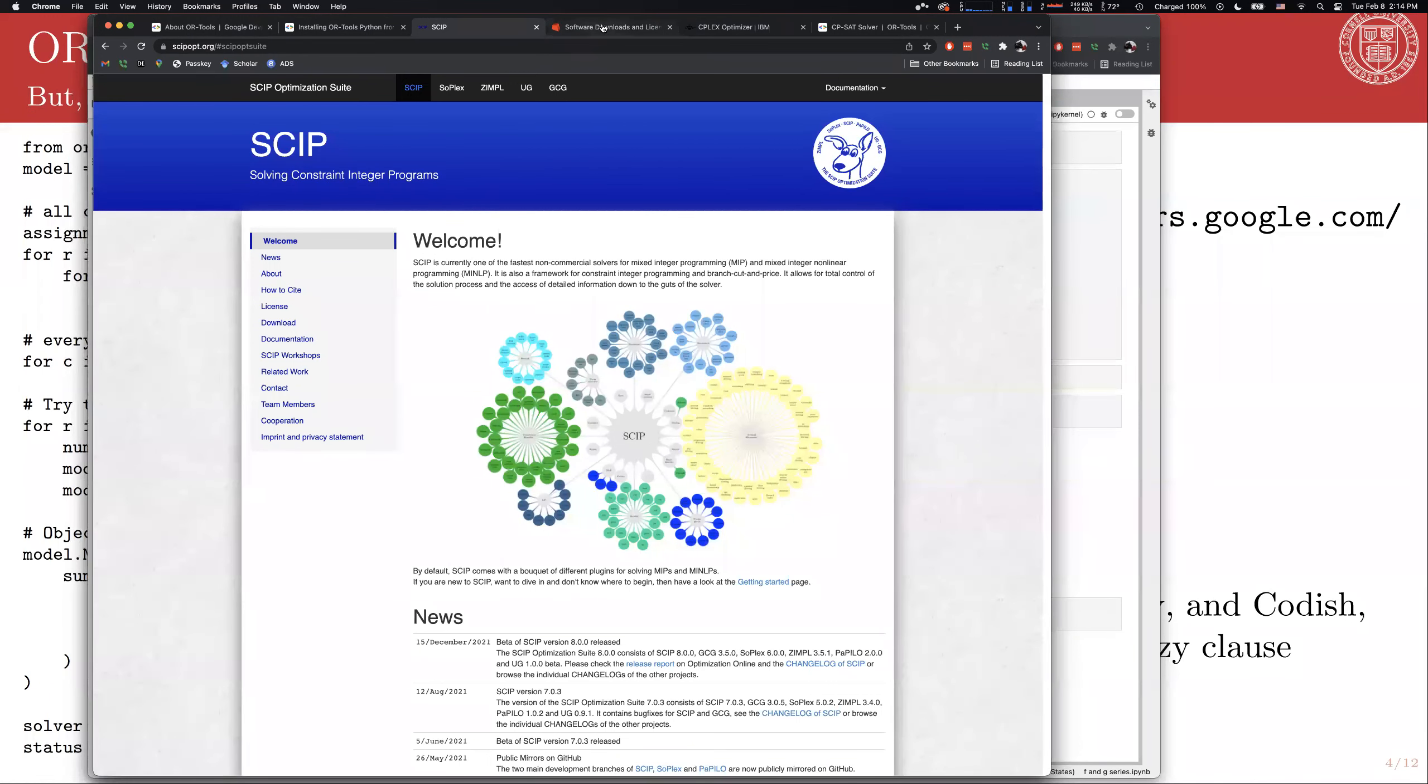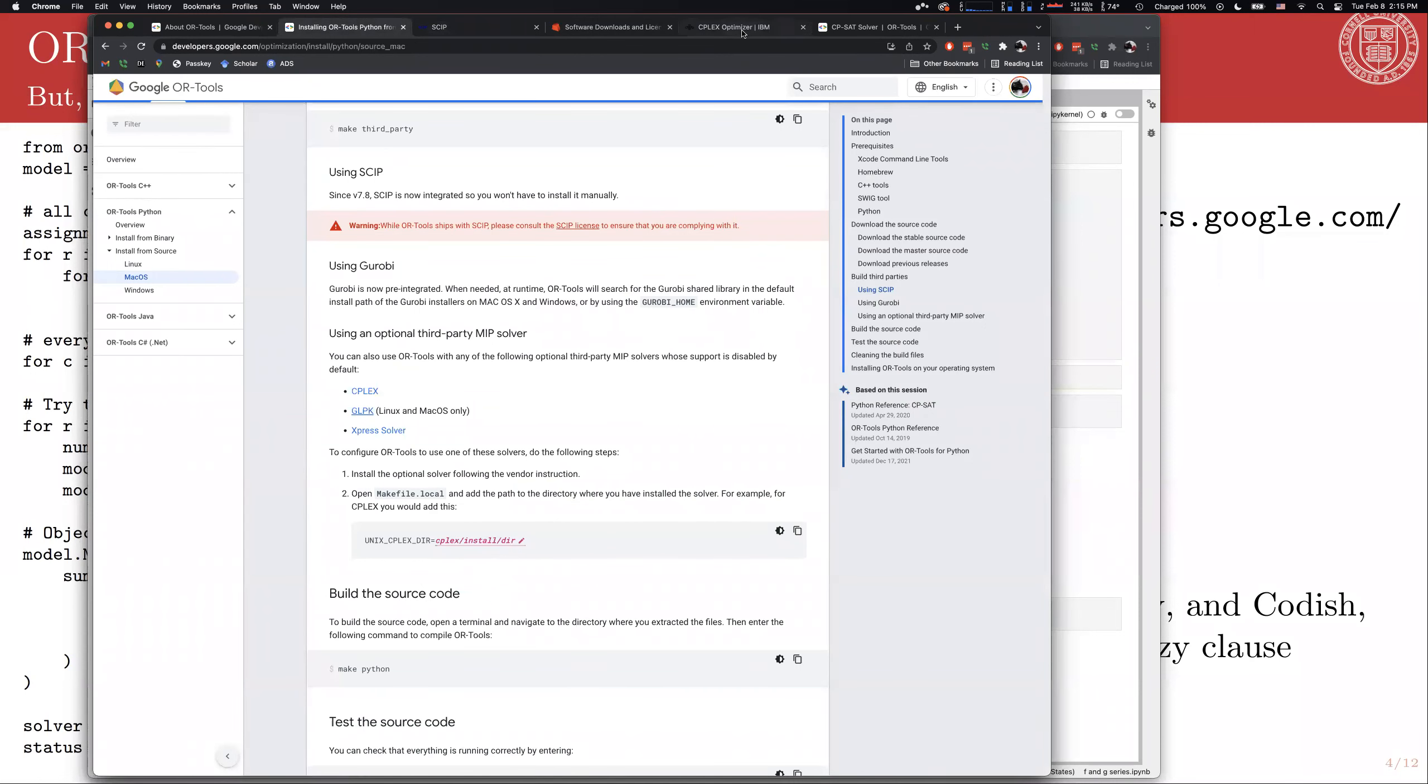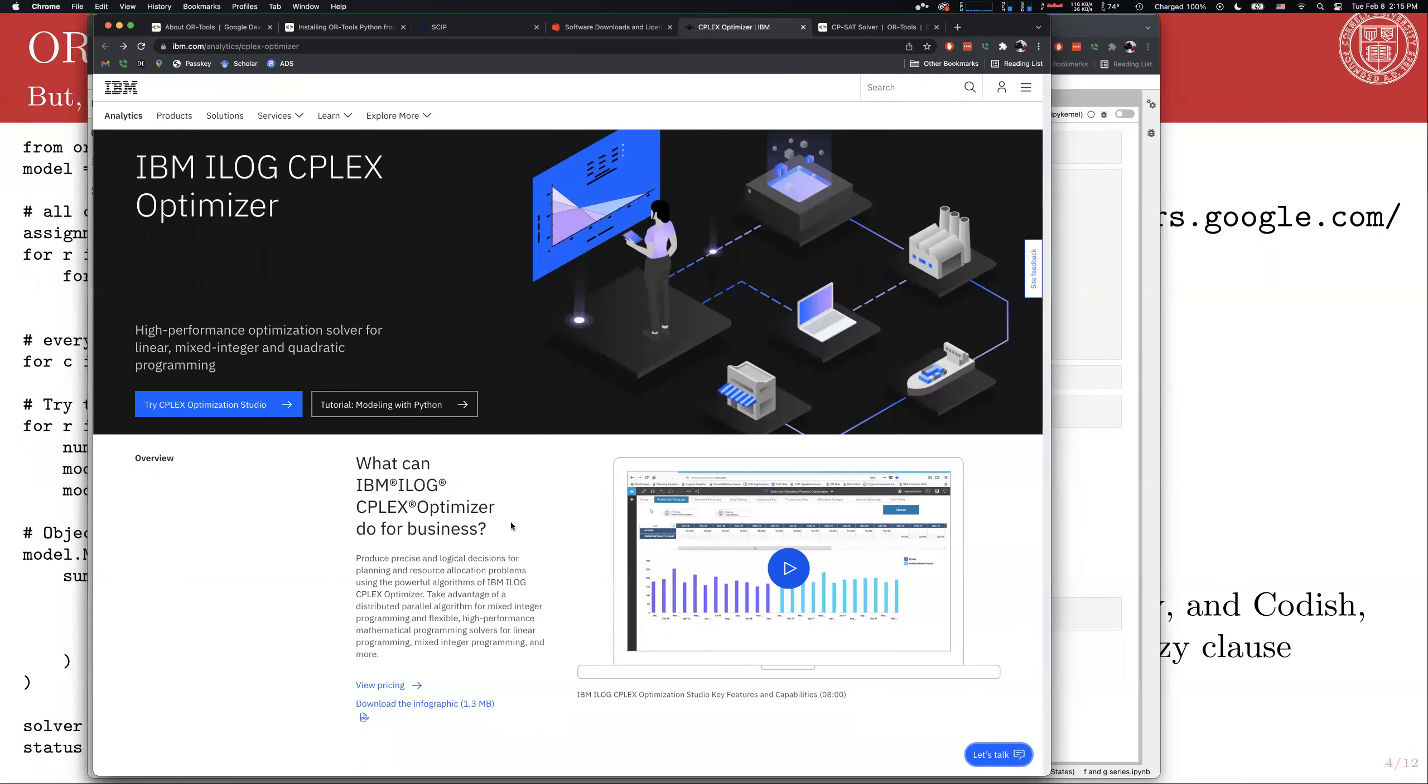It natively wraps something called Gurobi, which is a commercial solver. Gurobi is a commercial piece of software, but they have a very nice academic license. So, anybody with an EDU email and anybody associated with a university can basically request a limited time license and then just keep requesting it. And this is another really, really powerful mixed integer programming solver as well as a Boolean integer programming solver. This also has hooks potentially for things like CPLEX, which is IBM's optimization suite. But the cool thing is that through OR-tools, you can be using it through a common interface, which means that you can write your optimization once and not have to use a specialized optimization language.